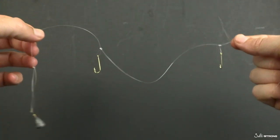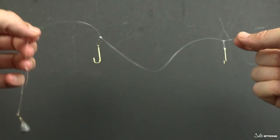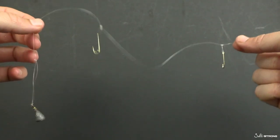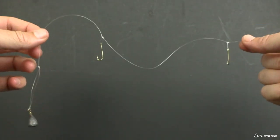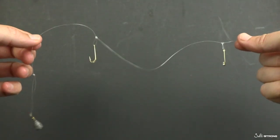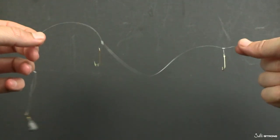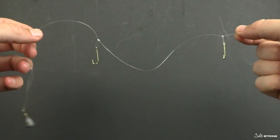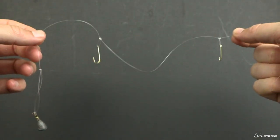Hey, this is Luke with Salt Strong. In this video, you're going to see how to tie what I believe is the ultimate dropper rig for catching bait fish. I'm going to explain the features and benefits first, and then at the end, we're going to tie it.